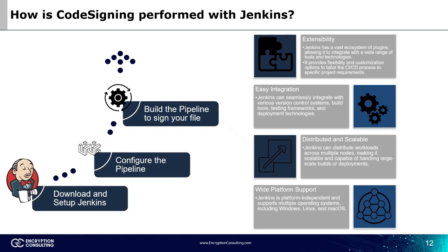To get started with Jenkins, you will need to download and set up Jenkins, configure the pipeline, and then build the pipeline to sign your file. Jenkins has many benefits including extensibility — Jenkins has a vast ecosystem of plugins allowing it to integrate with a wide range of tools and technologies. It provides flexibility and customization options to tailor the CI-CD process to specific project requirements.